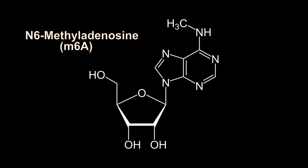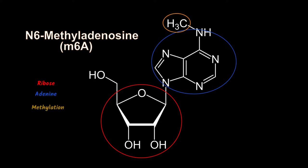It is a nucleoside which is formed by the union of a ribose and an adenine with a methylation of the nitrogen-6 position. This modification regulates the mRNA metabolism at different levels.